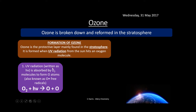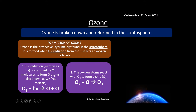UV radiation is absorbed by oxygen molecules to form O atoms, also known as O dot free radicals. These oxygen atoms then react with an O2 molecule to form ozone, which is O3. It's probably one of the easiest equations you'll see — pretty straightforward, nothing too complicated.